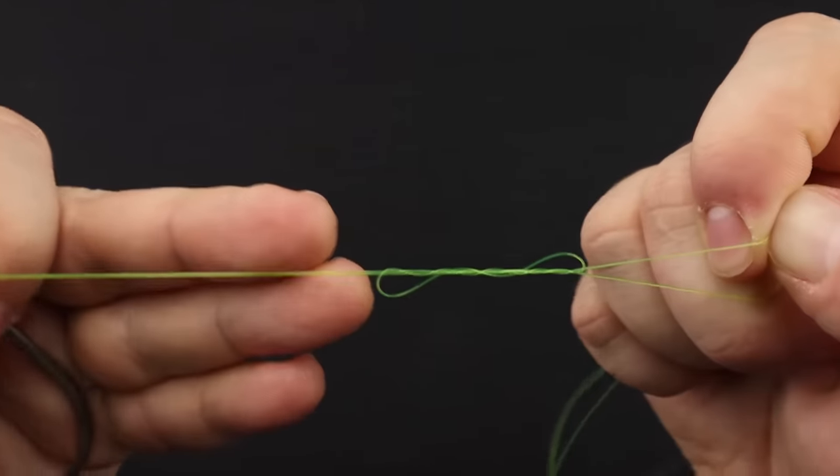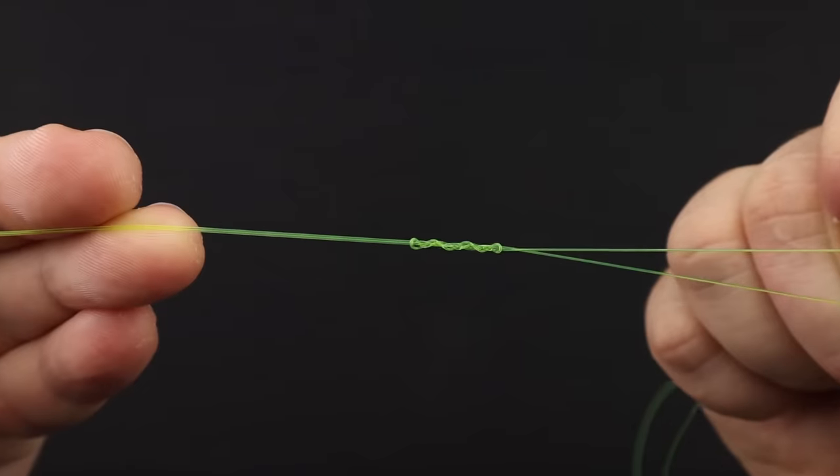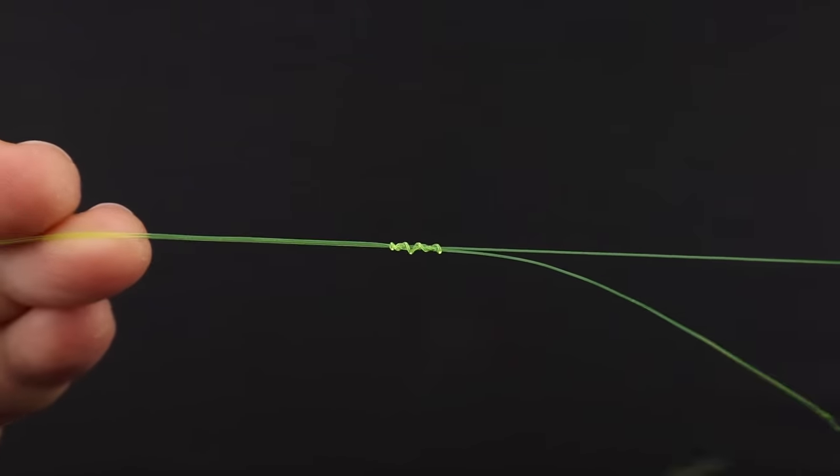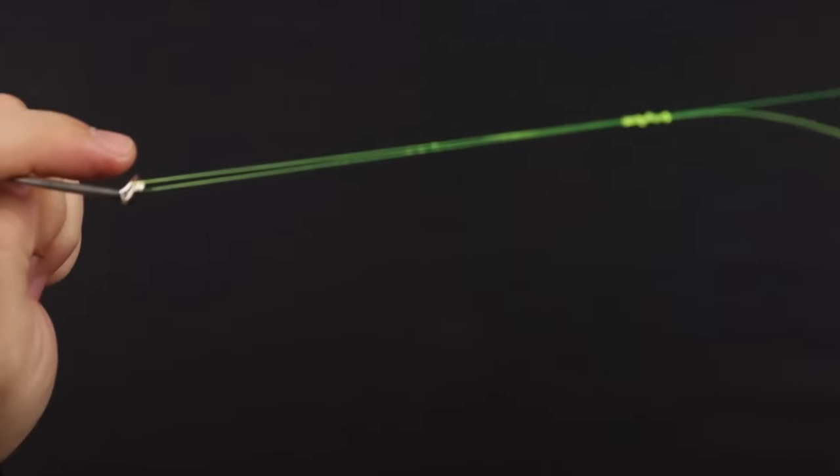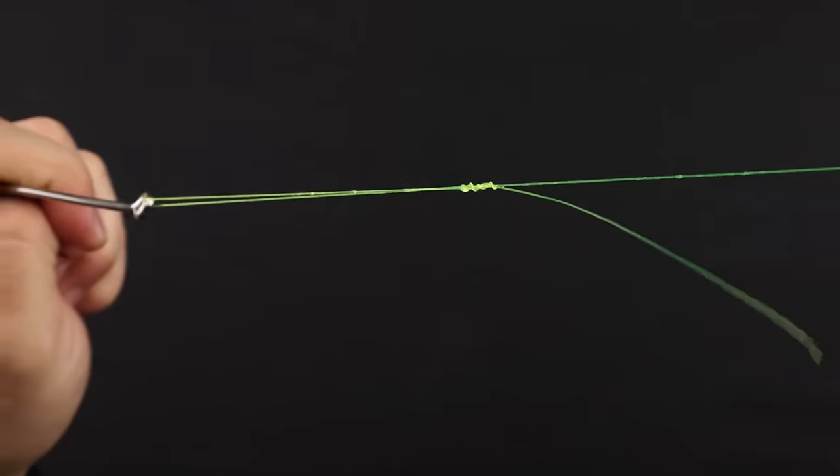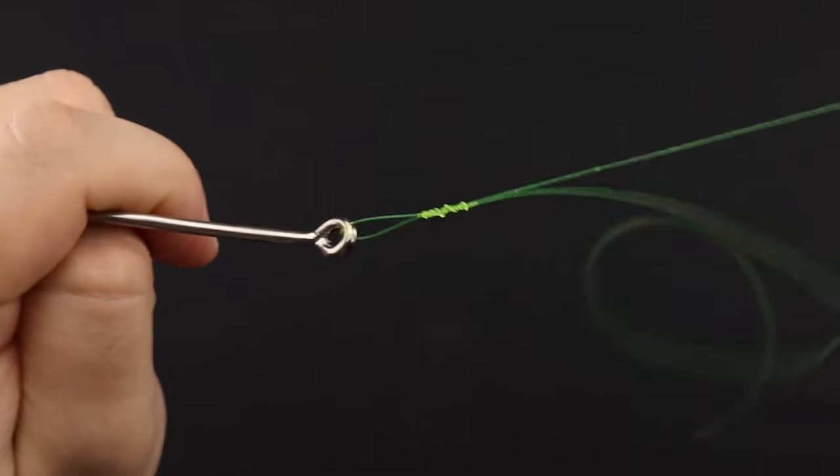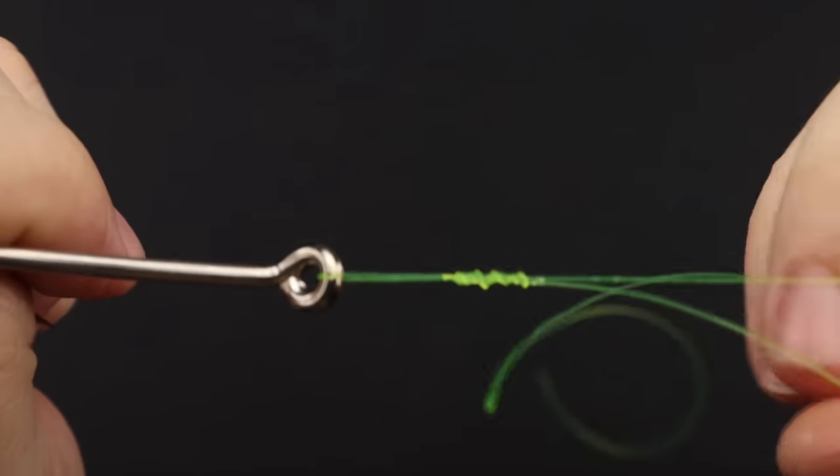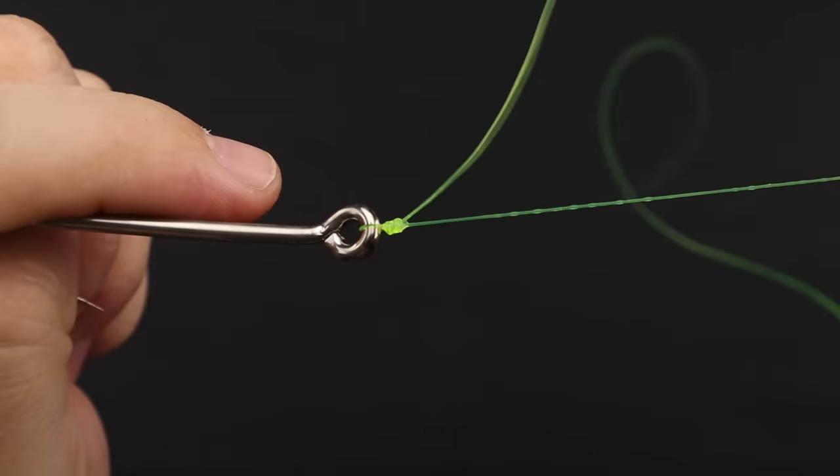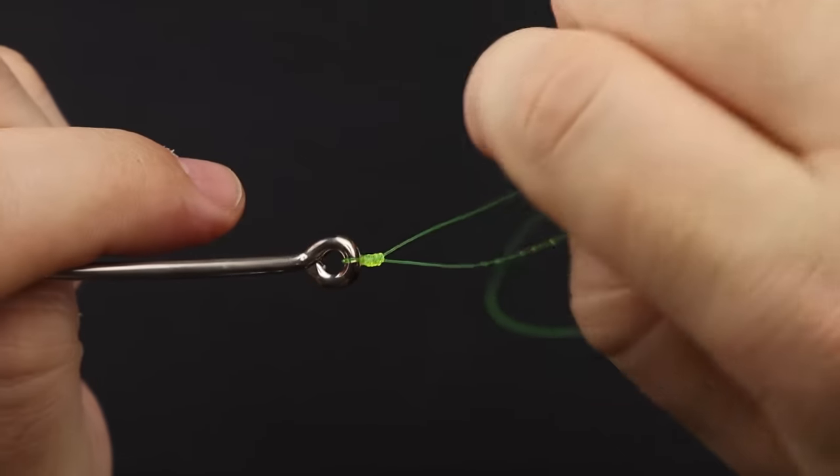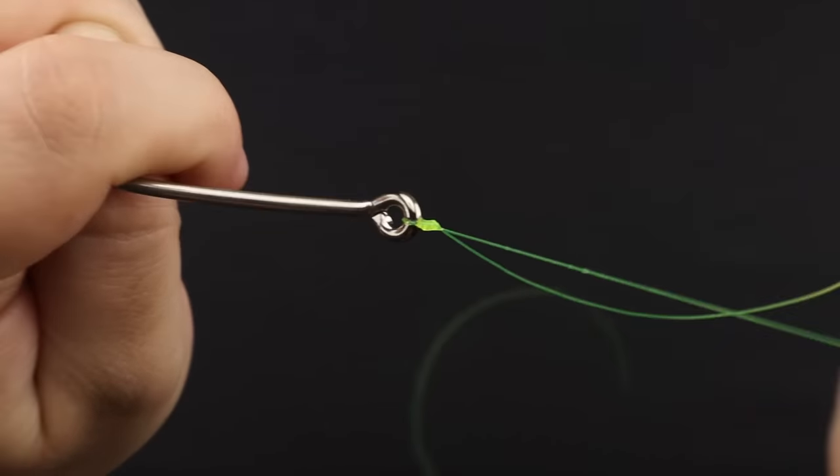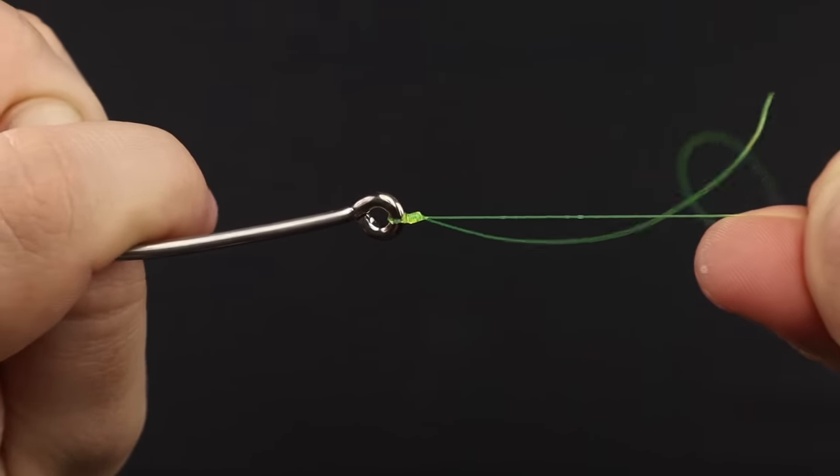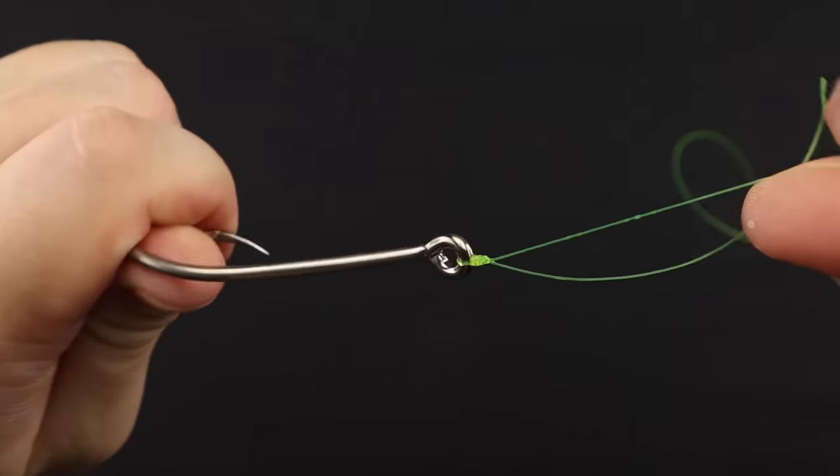Now at this point go ahead and pull your tag end. This will start forming the knot on the main line. But don't fully snug this knot up quite yet. I like to moisten the knot up to the hook here and start slowly pulling on the main line. This knot will start moving toward the hook shank. Now when you're close here, I like to give the tag end a good pull and then back to the main line and then really snug and pull that main line to set that knot on the hook.